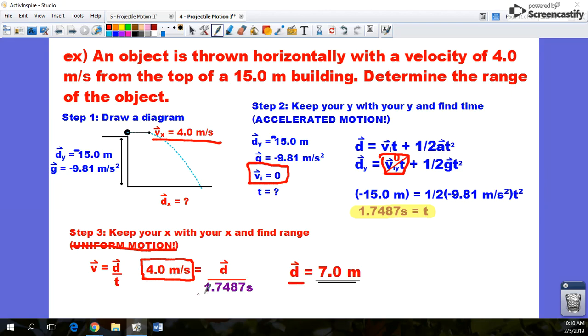So, four meters per second. Plug in my time that I got from the last problem, and I rounded off to two significant digits. It works out to 7.0 meters.